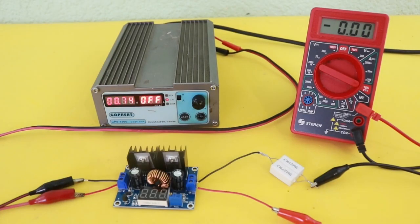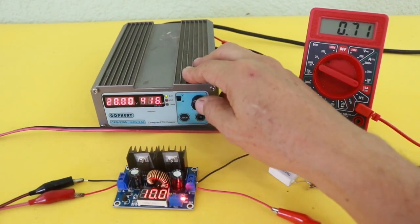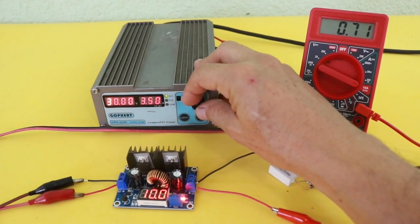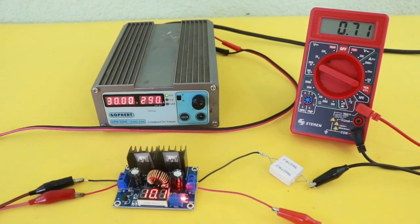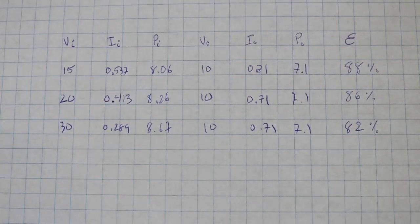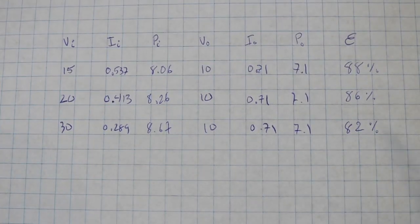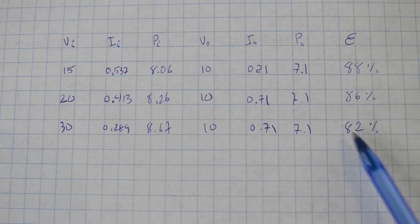Finally, I will use 30 volts at the input and let's calculate the efficiency again. So as it was expected, the efficiency is even lower, 82 percent.